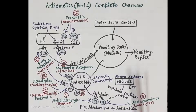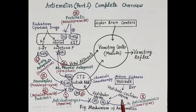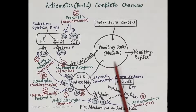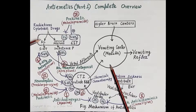The chemoreceptor trigger zone is also stimulated by emetogenic impulses from the inner ear — the vestibule. The vestibule generates emetogenic impulses due to motion sickness or travel sickness. These impulses are carried by the vestibulocochlear nerve and stimulate muscarinic and histaminic H1 receptors on vestibular nuclei, transmitting emetogenic impulses to the CTZ, inducing vomiting.